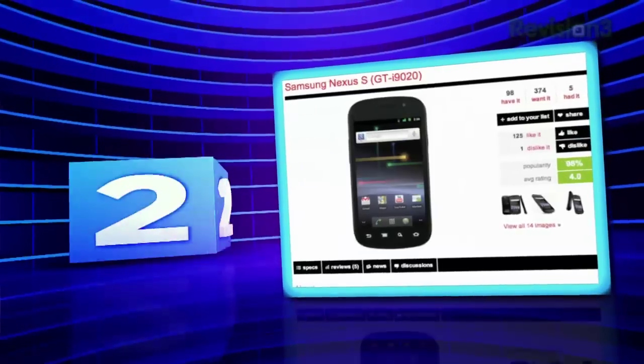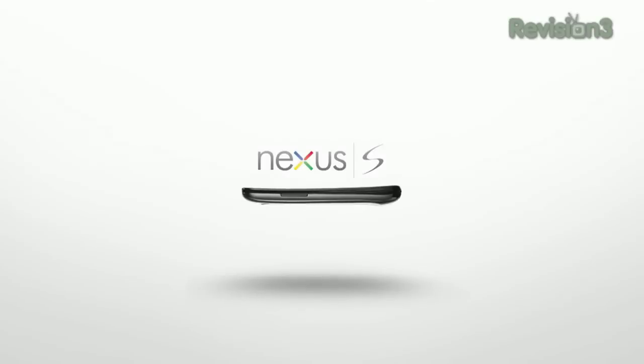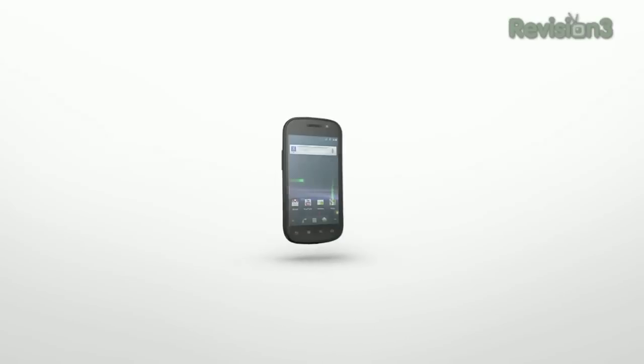Sliding in at number 2, the Samsung Nexus S. I prefer to call it the GT-I9020. But it is the Android phone extraordinaire right now and the most popular phone on the list. At CES, Samsung gave away free batteries for all their phones. They ran out of Nexus S batteries within an hour of the show's opening. It's popular.